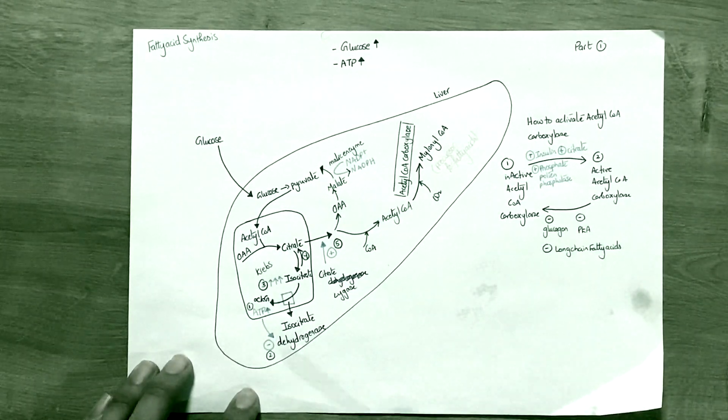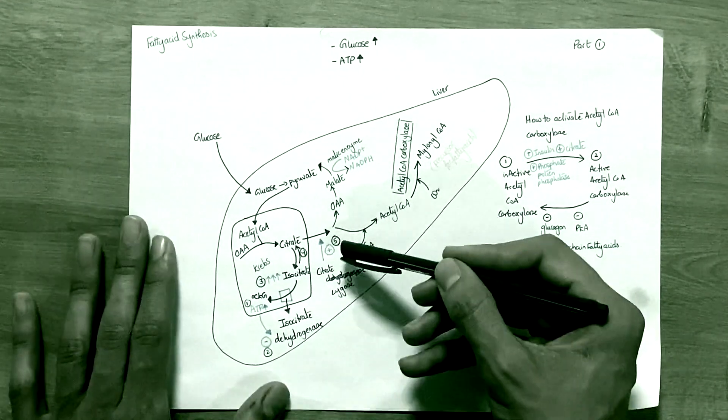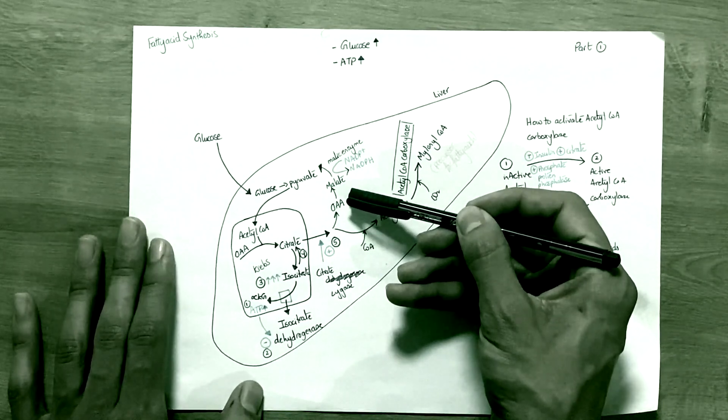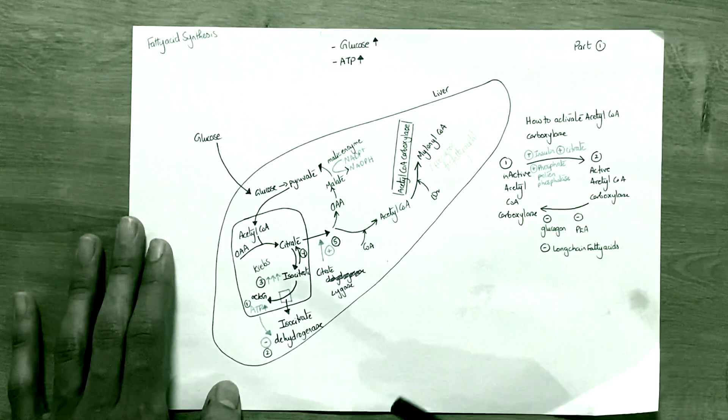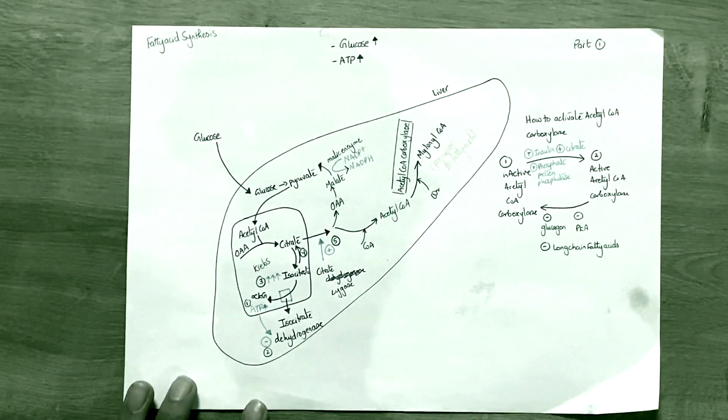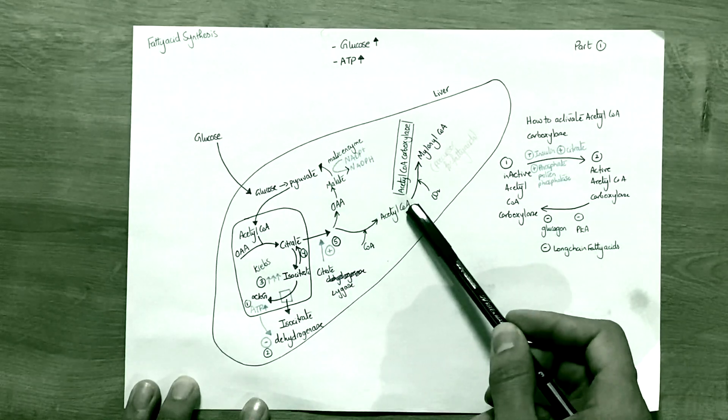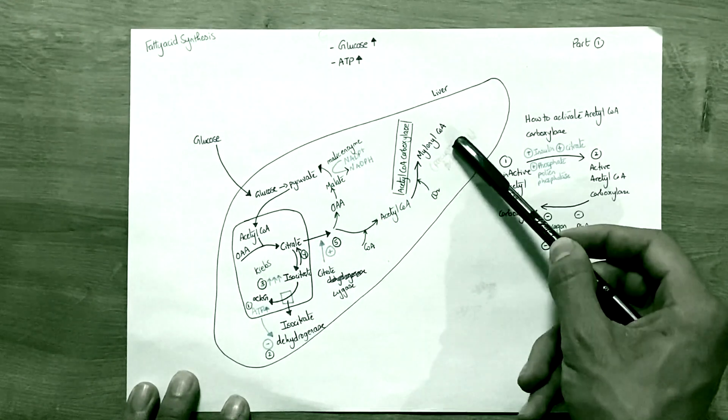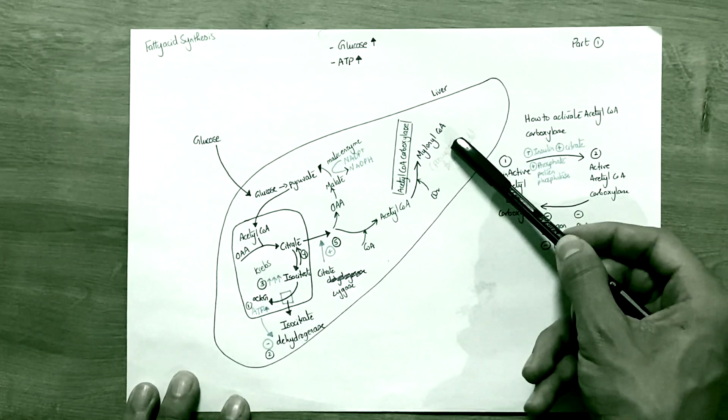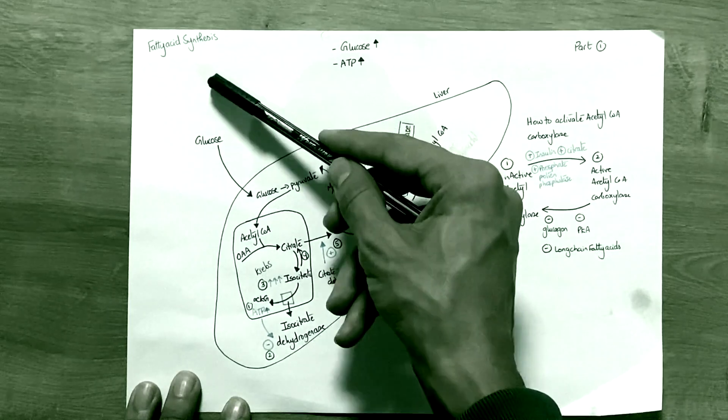What citrate ligase does is that it acts to do two things: it converts citrate into either oxaloacetate or it converts it into acetyl-CoA. The key step for us here is the acetyl-CoA step, because acetyl-CoA is then converted into a precursor called malonyl-CoA, which is the main precursor used to produce fatty acids, which is our general goal.